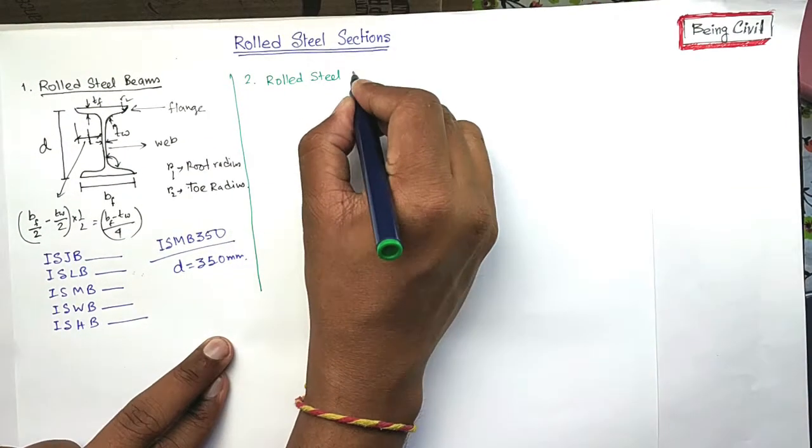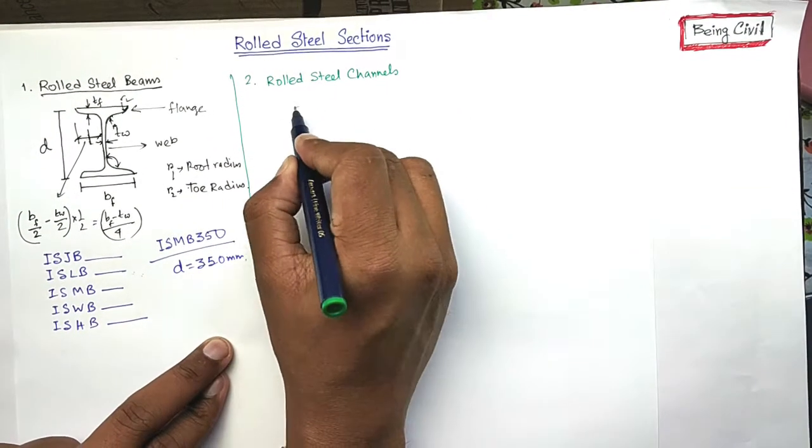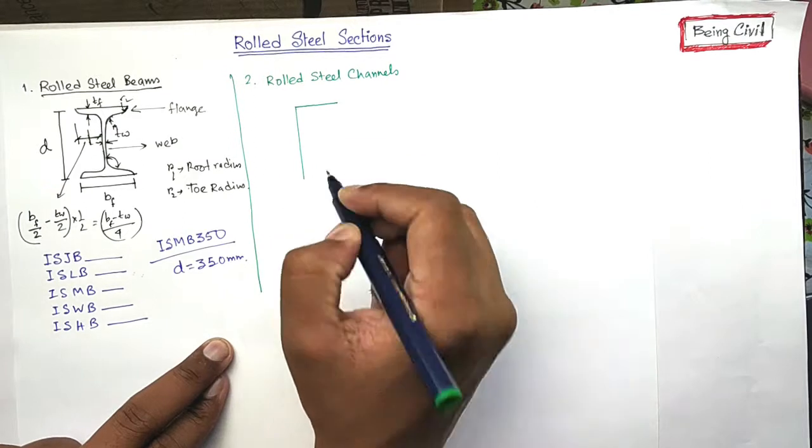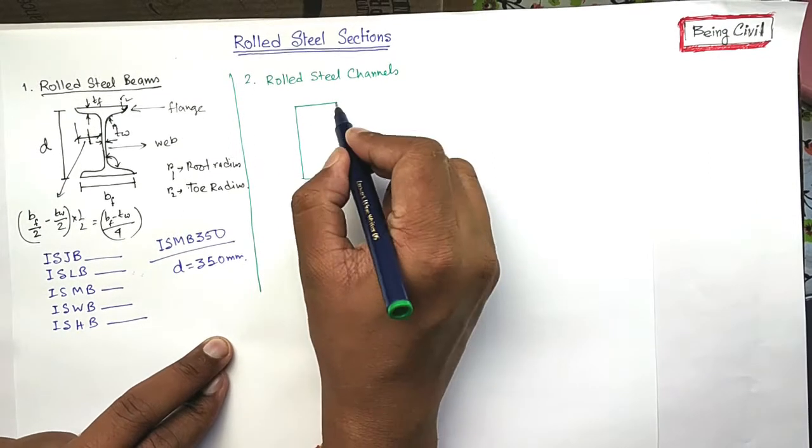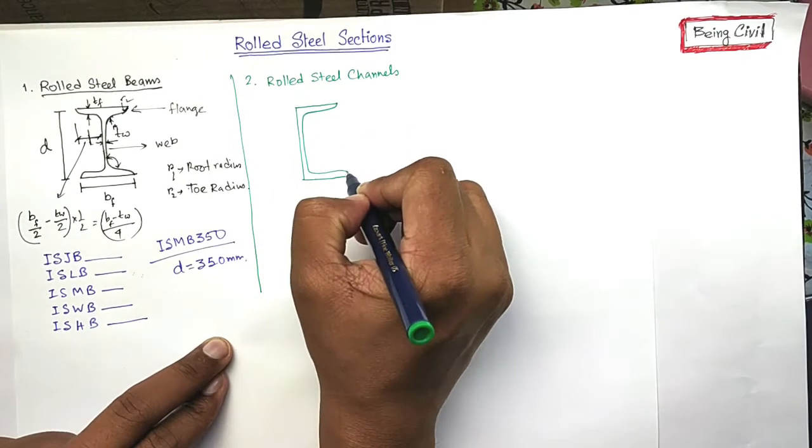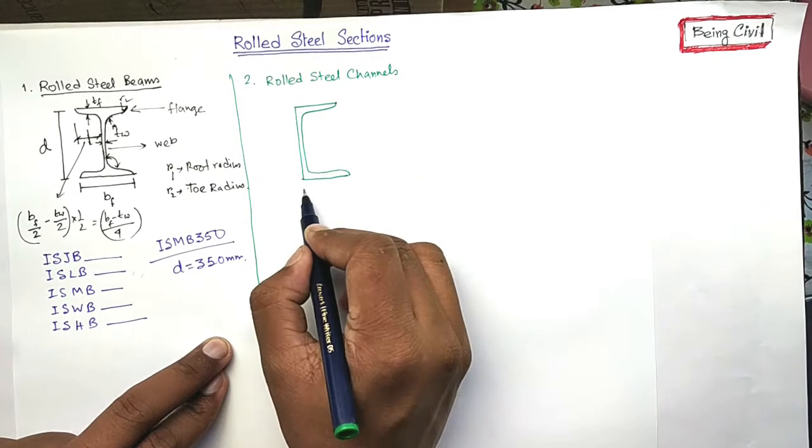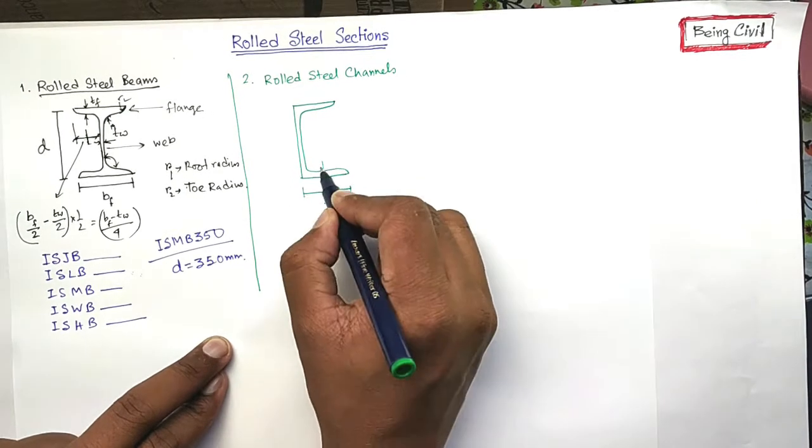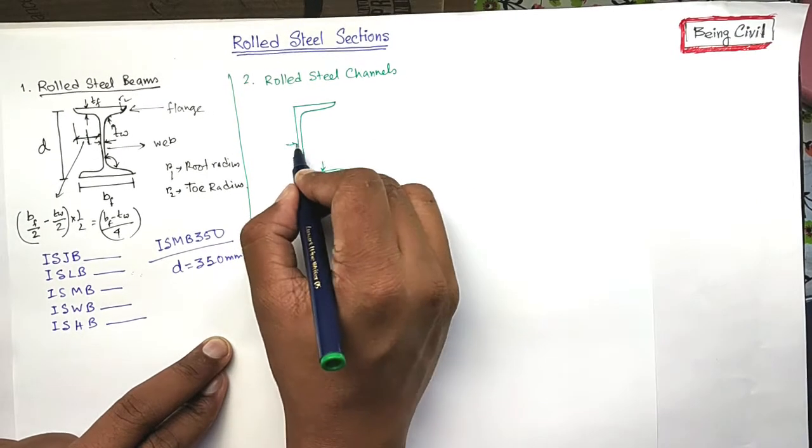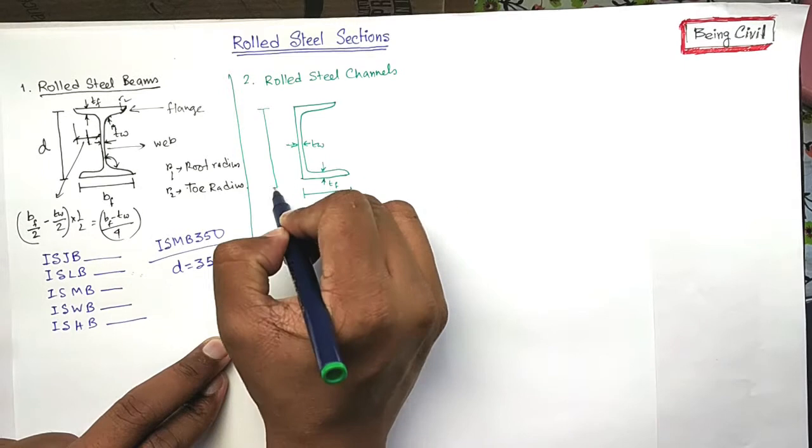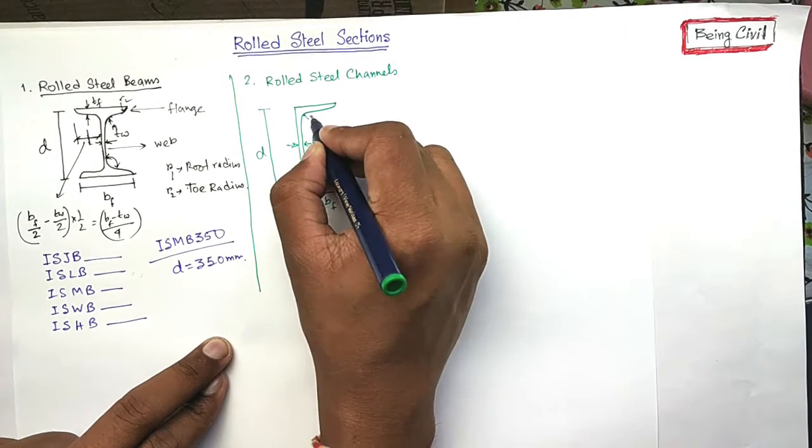Channels means it is shaped like this. Here this is the flange, width of the flange, thickness of the flange, thickness of the web, depth of the section, this is root radius, this is toe radius.